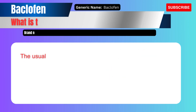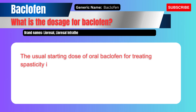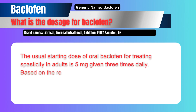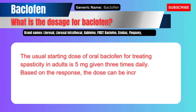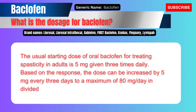The usual starting dose of oral baclofen for treating spasticity in adults is 5 mg given 3 times daily. Based on the response, the dose can be increased by 5 mg every 3 days to a maximum of 80 mg per day in divided doses.